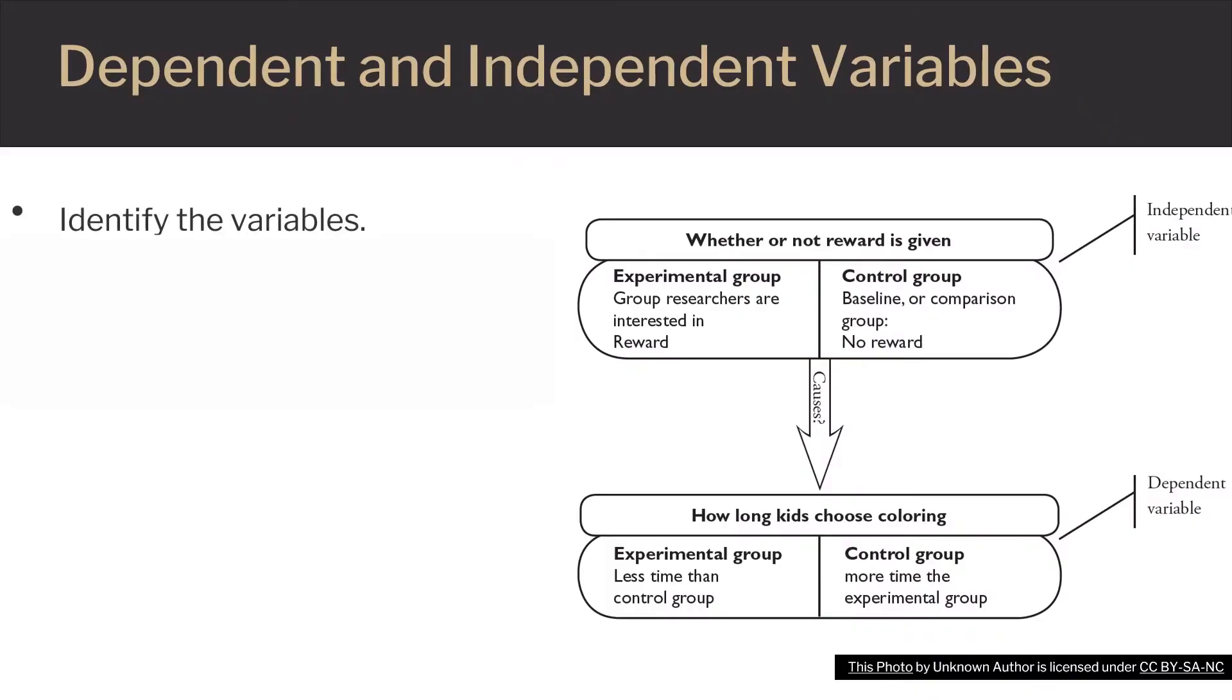One of the most important parts of conducting a study is finding the cause and effect of something on something else, or a correlation between variables. It's important to determine what the cause is in your experiment and what the effect is. The variable that is being manipulated, or the cause, is the independent variable of your study.